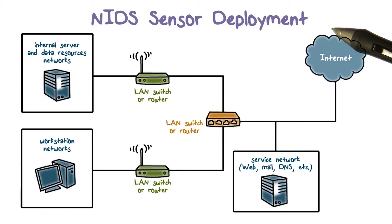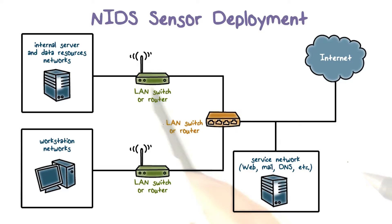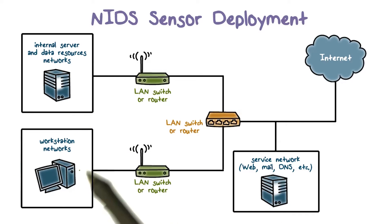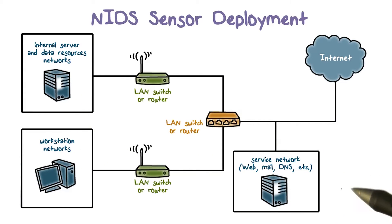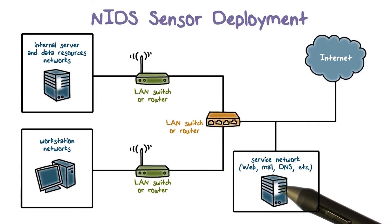Let's discuss more about network IDS deployment. Here's an example enterprise network configuration. The internal network has multiple subnets and the enterprise has public facing services such as a public web server.